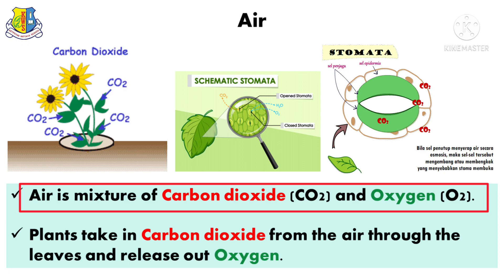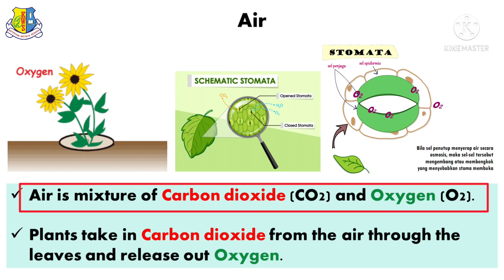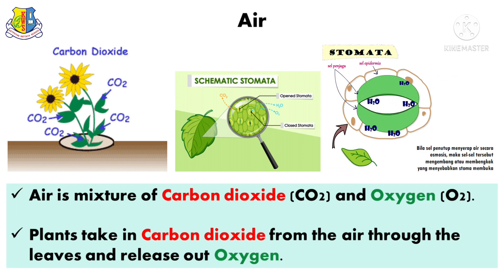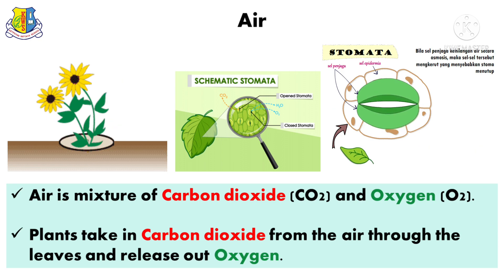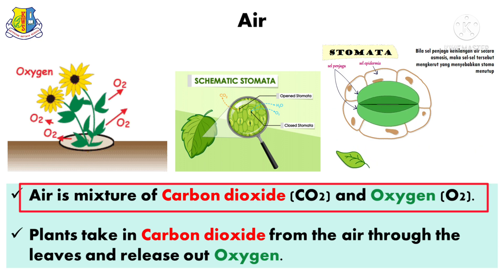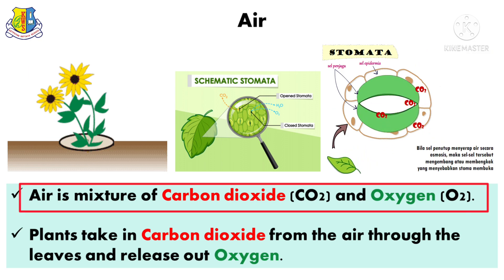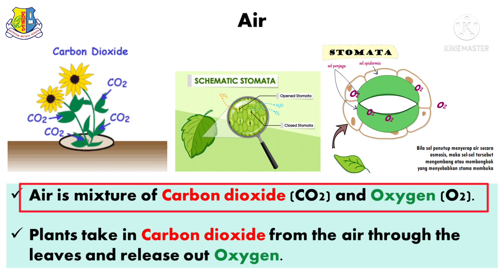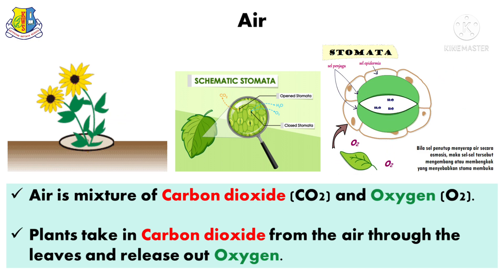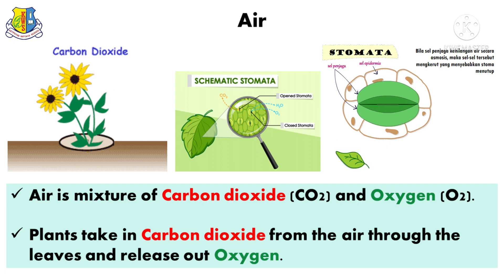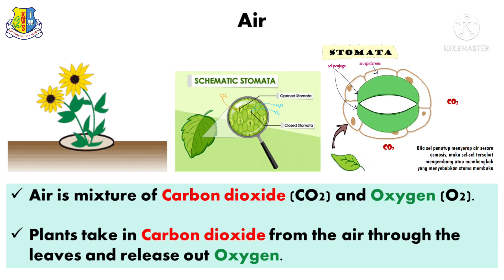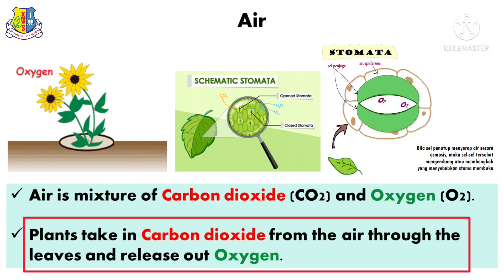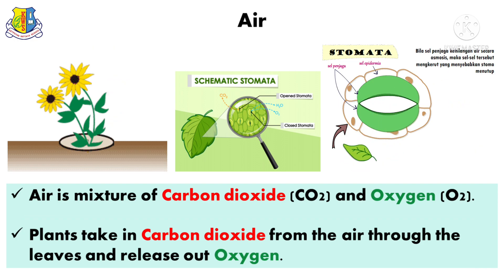Air is a mixture of carbon dioxide — in short form CO2 — and oxygen — in short form O2. Look at these pictures. Plants take in carbon dioxide from the air through the leaves and release oxygen.